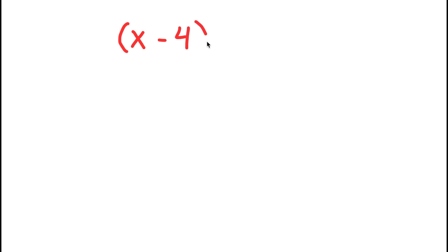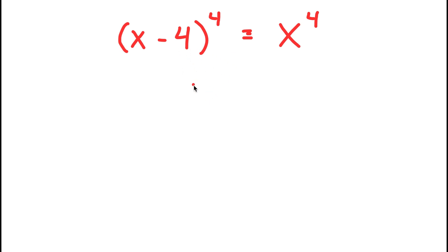In this equation, I have x minus 4 to the power of 4 is equal to x to the power of 4. My only variable in this equation is x, so that's what I'm going to be solving for.